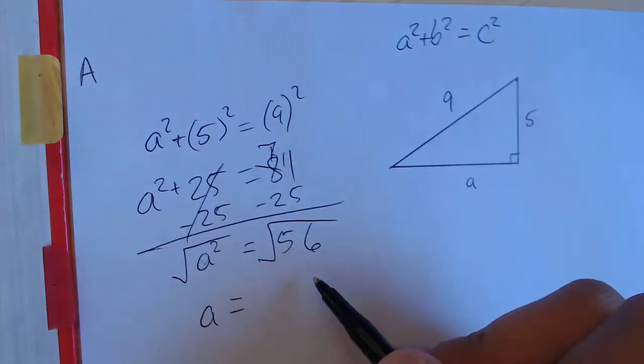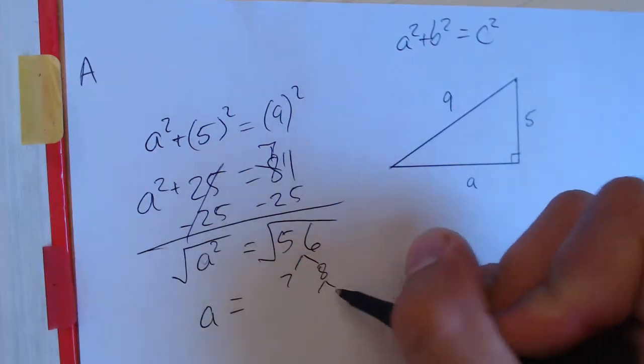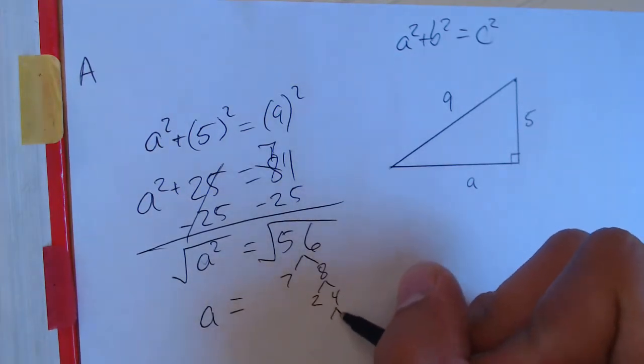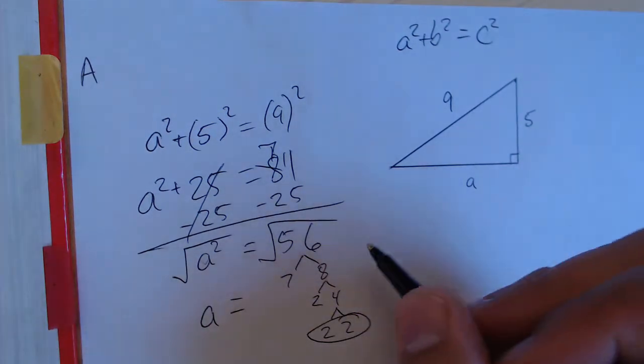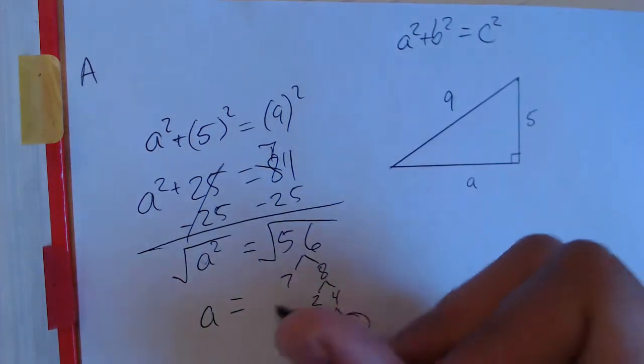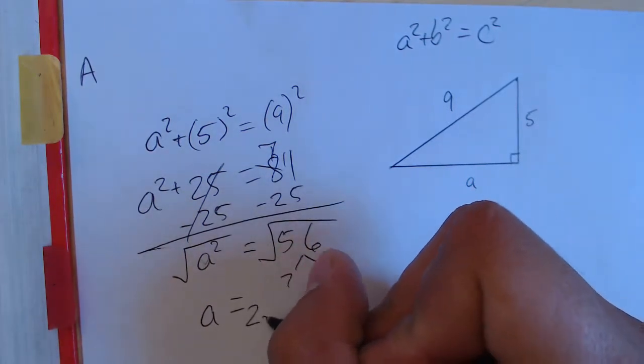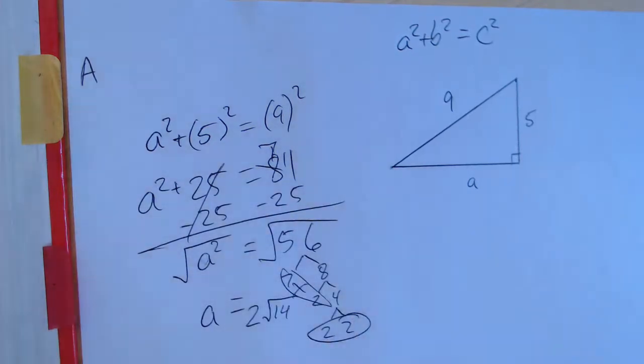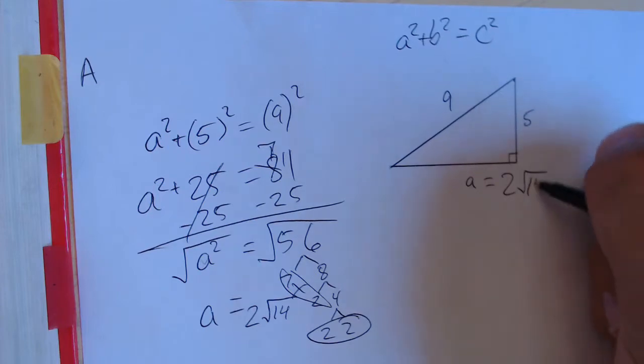And then to find the square root of 56, we'll go ahead and factor that. That is 7 times 8. 8 will factor into 2 and 4, 4 factors into 2 and 2. We've got a set of pairs, so 2 and 2 will become a whole number. And then we get 2 times the square root of 14, because this 7 and 2 get trapped inside the radical. So A is going to equal 2 root 14.